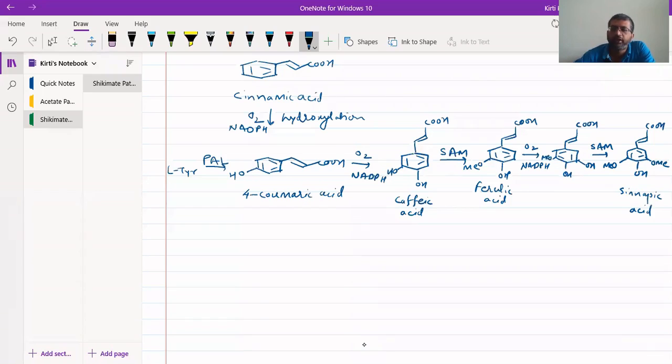So we get cumeric acid, caffeic acid, ferulic acid, and synapic acid. Amongst them, this cumeric acid, ferulic acid, and synapic acid are further reduced. This carboxyl group is further reduced to primary alcohol.